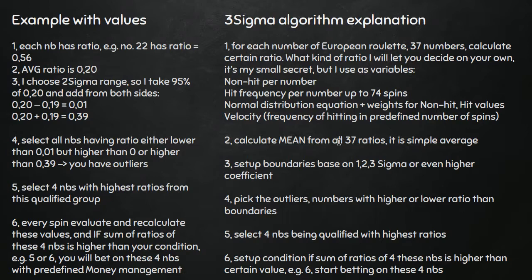Then I pick the outliers — numbers having ratios higher or lower than the average plus or minus sigma. If the average is 1 and sigma is 0.5, the boundaries are 1.5 and 0.5. A number with a ratio of 0.2 or 1.6 gets taken into the group of qualified numbers. Now it's time to select four numbers, because I play with four numbers — I found this is the best strategy for earning money.